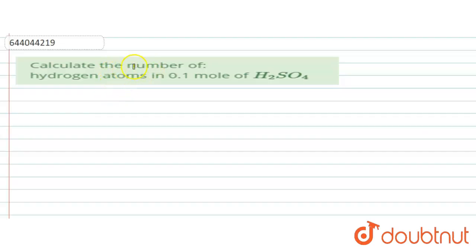In the question it is asked that number of hydrogen atoms in 0.1 mole of H₂SO₄. So in the question, number of moles is given as 0.1 mole and number of hydrogen atoms are asked.